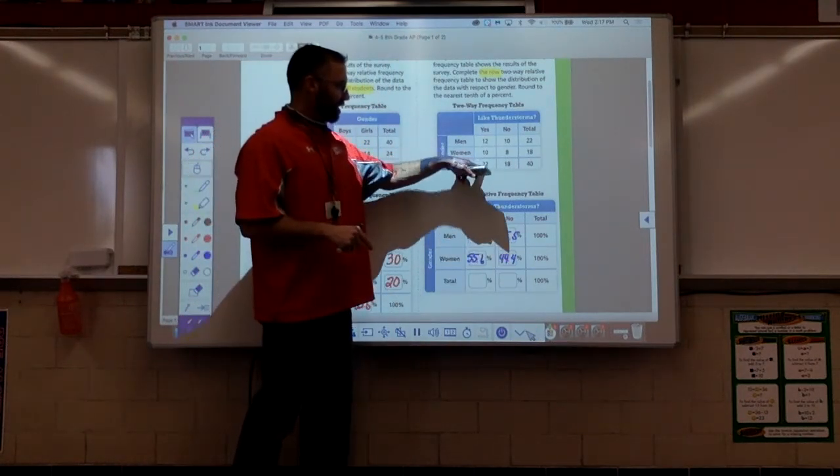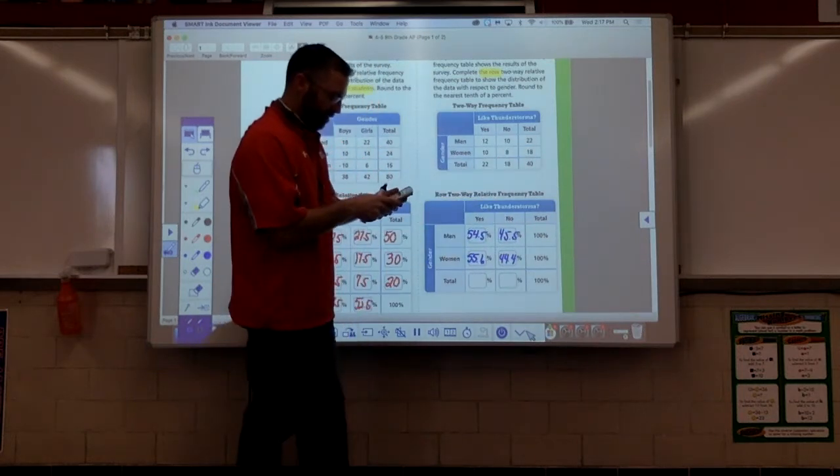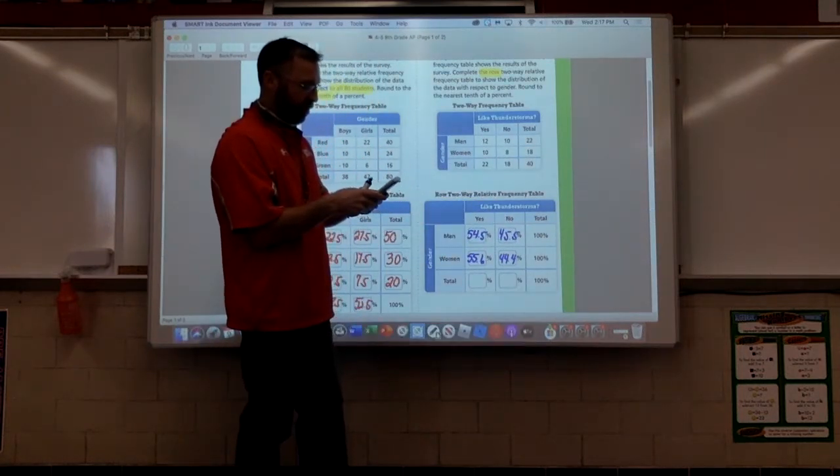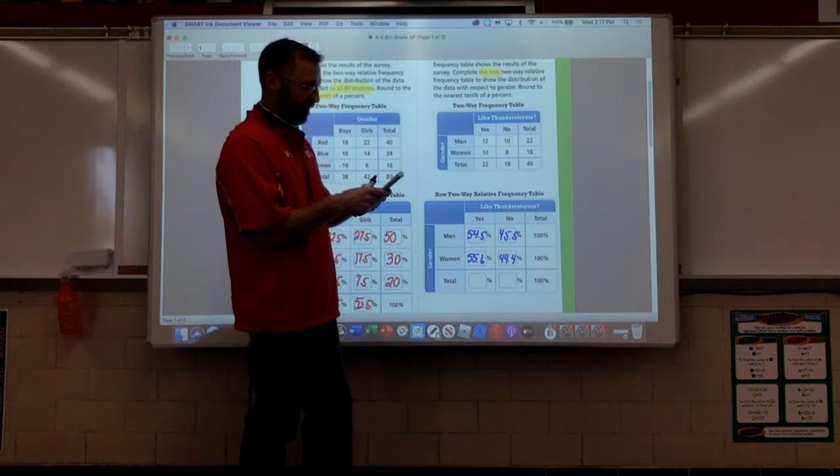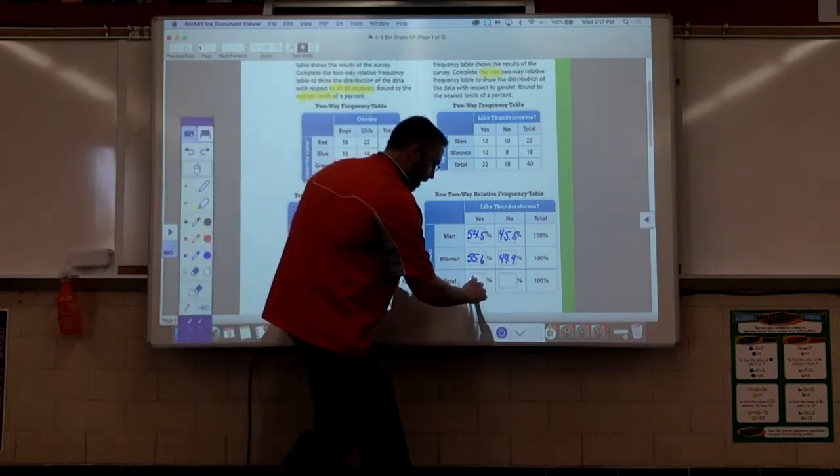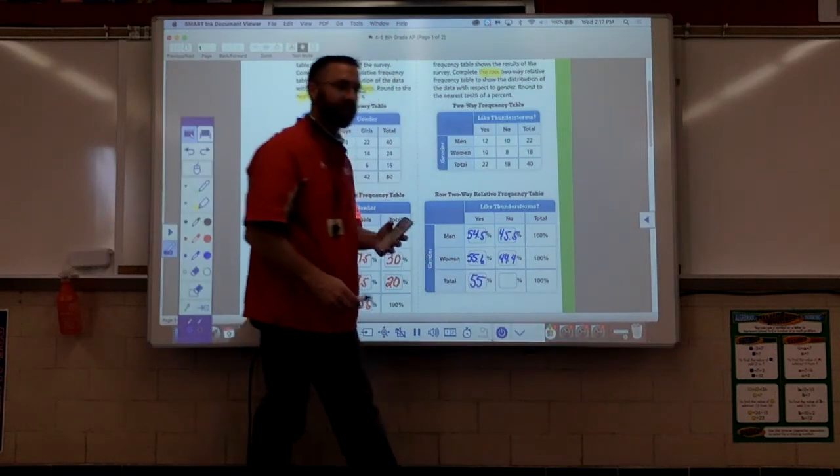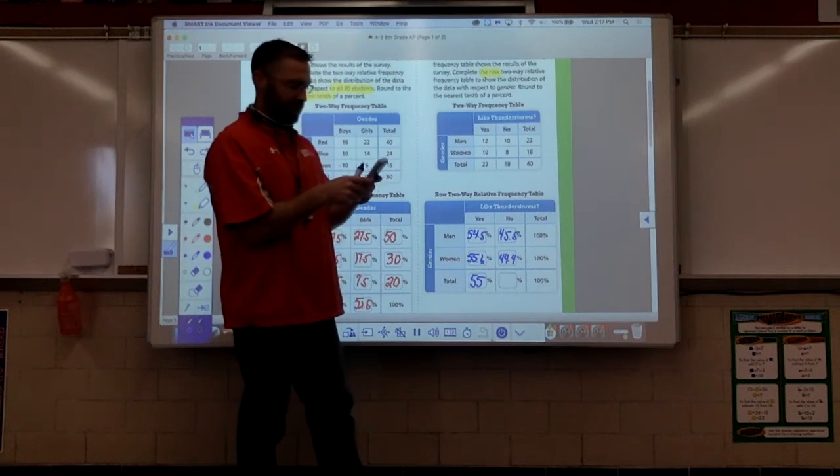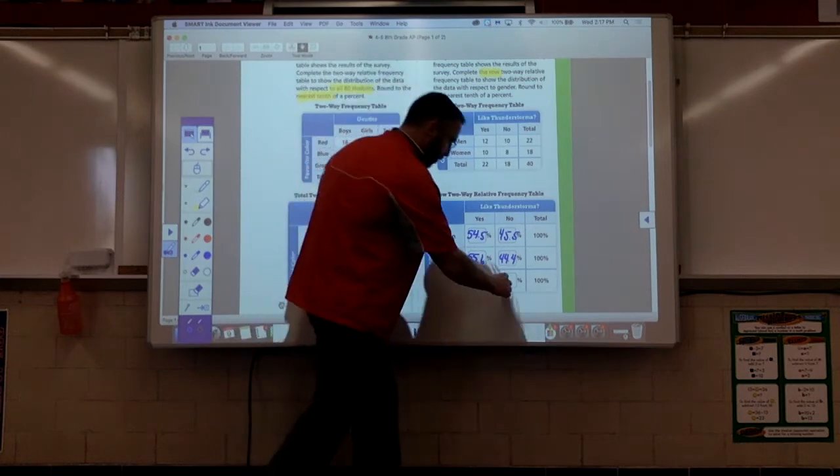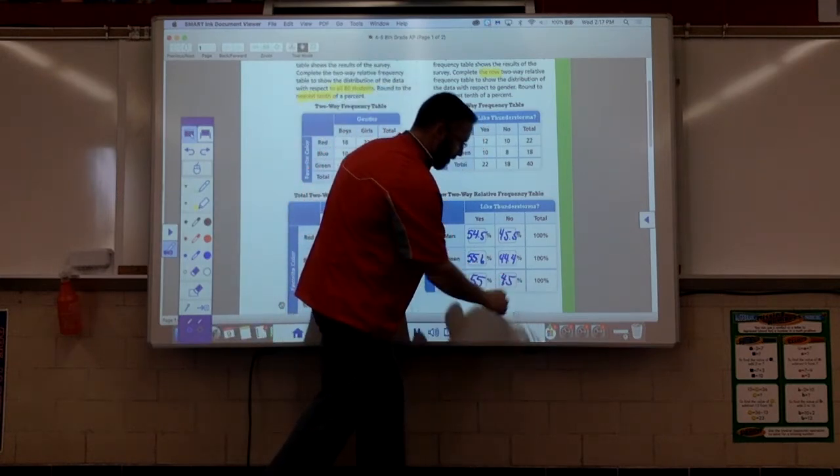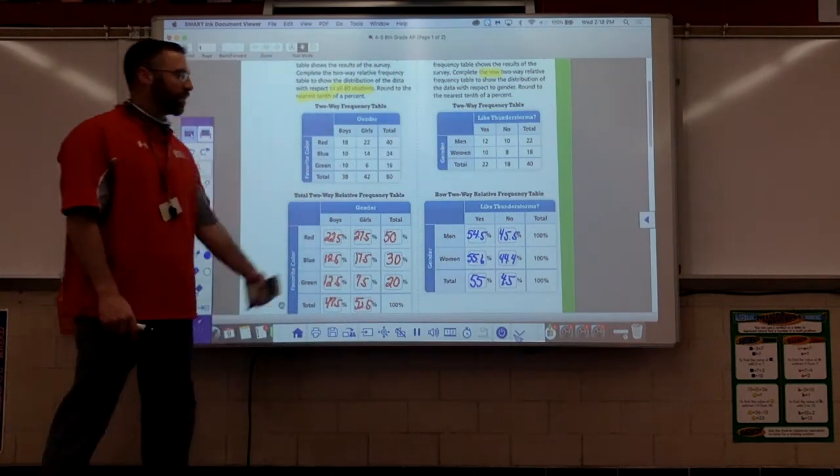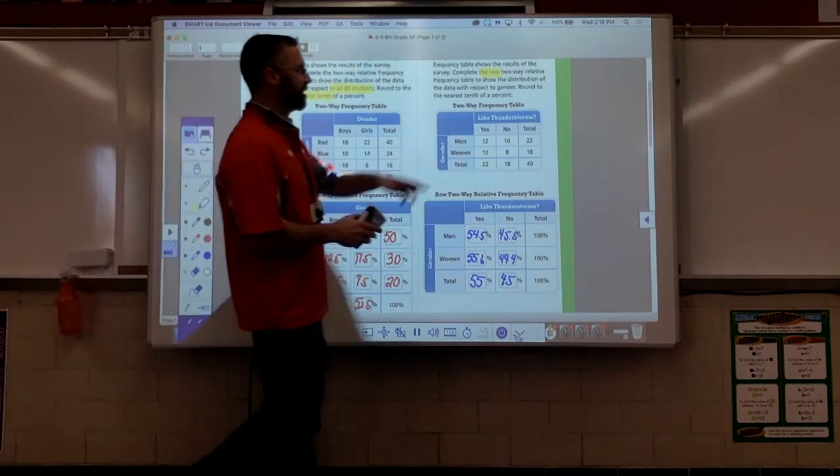Next row, total row, it's 22 out of 40. So I take 22 divided by 40 times 100, this comes out to be a whole percent, 55 percent. Next one, 18 divided by 40 times 100, that's a 45 percent. I like the one hundo reference. Row relative frequency table.